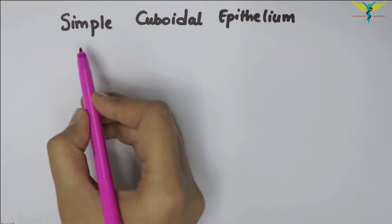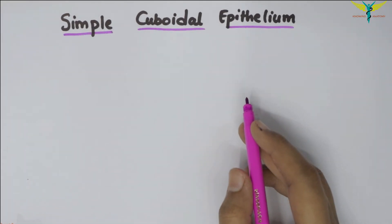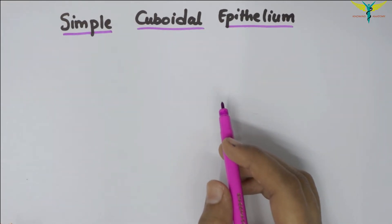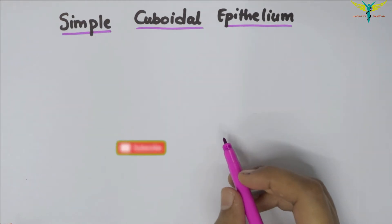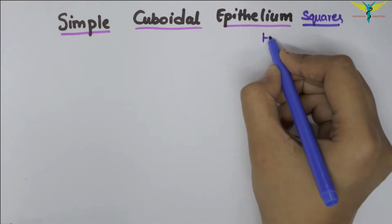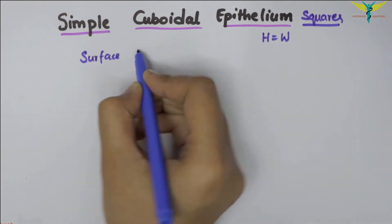In this video, let's learn about the simple cuboidal epithelium. The simple cuboidal epithelium is made up of cells that look like squares in which the length and breadth are equal. That means the height of the cell is about the same as the width—the height is equal to the width.